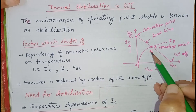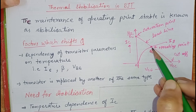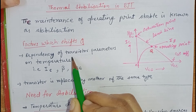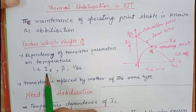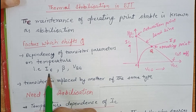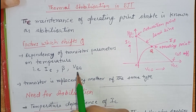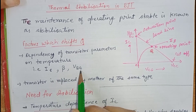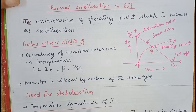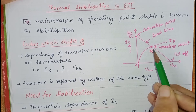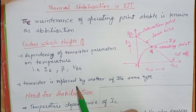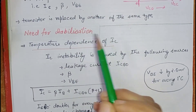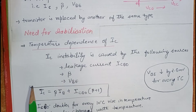Now, what are the factors for instability of this operating point? These factors are dependency of the transistor parameters — IC, β, and VBE, meaning collector current, current amplification factor, or base-emitter voltage. These parameters depend on temperature; as the temperature changes, these parameters also change. The second factor is when a transistor is replaced by another one of the same type. We will discuss these factors in detail, which we can call the need for stabilization.